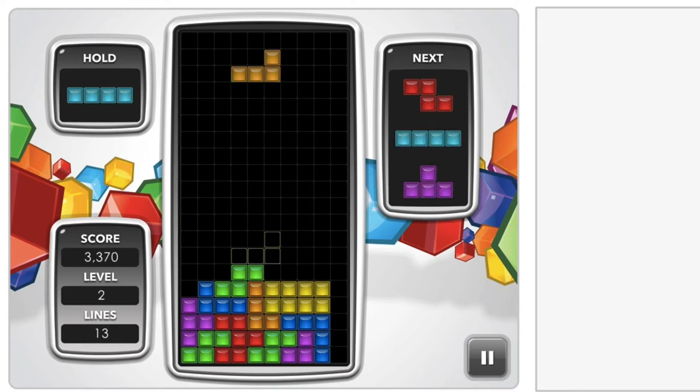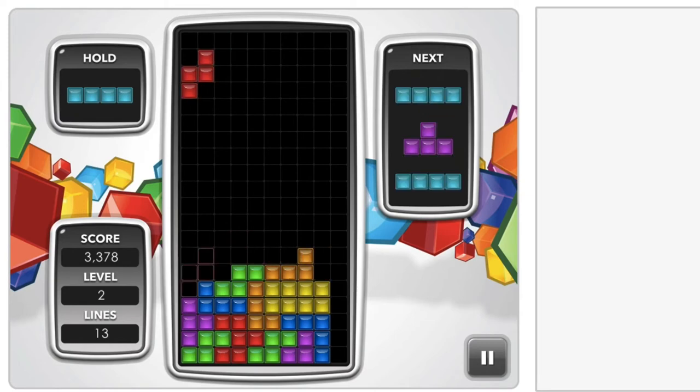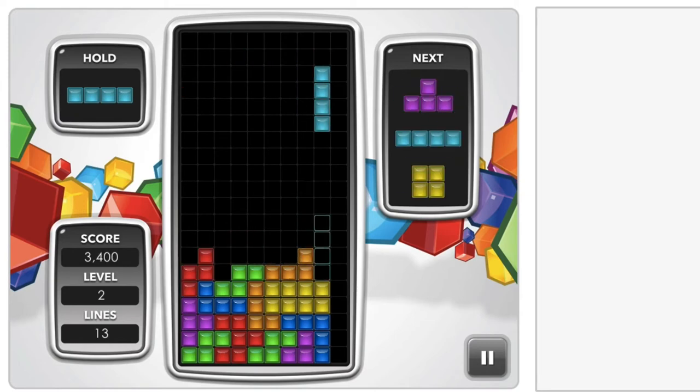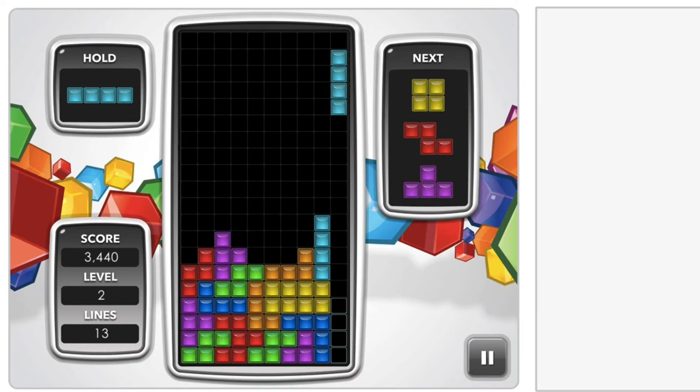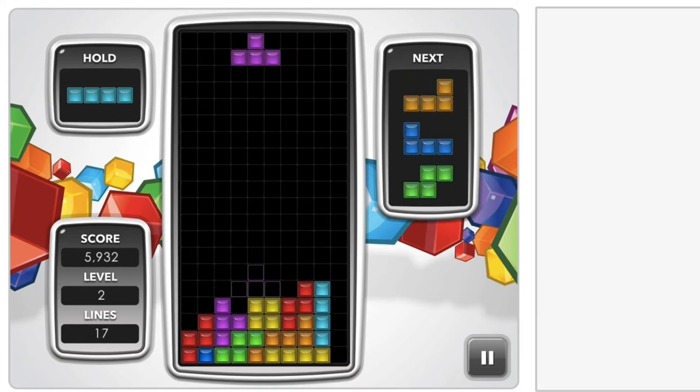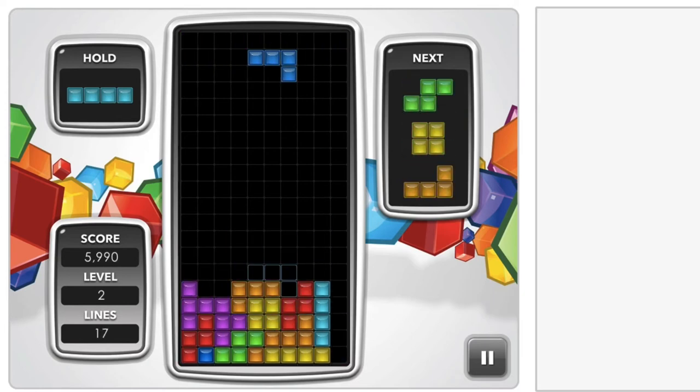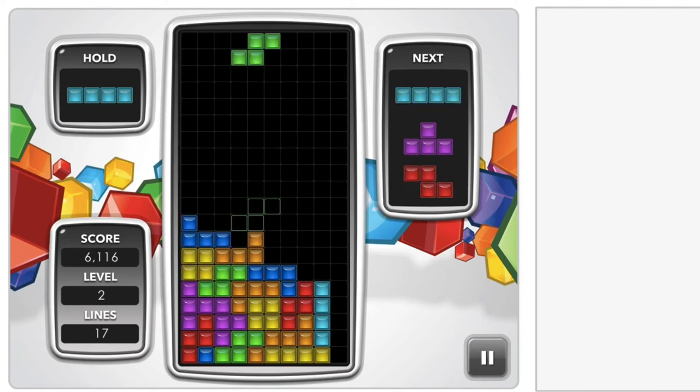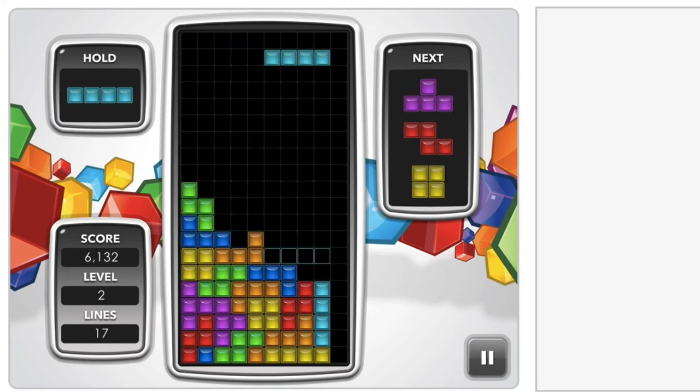When you're a beginner you can soft drop using the bottom arrow and you have time to rotate the pieces before it locks in a specific position. You can also fast drop or hard drop using the space key and it's much faster. It gets you more points but that's as you get better and better at the game.